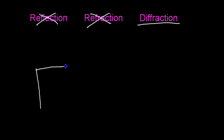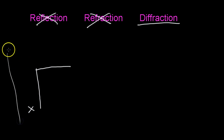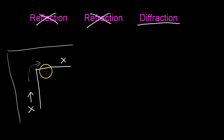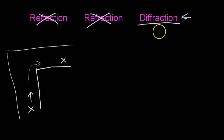A good way to explain diffraction is: let's say you're around the corner — you're here, there's a street, another street, and your friend is over there. You're looking, but you can't see your friend because you can't see around the corner. But if your friend yells at you, you can still hear him. You can't see around the corner, but you can hear around the corner. That's because sound waves will diffract better than light waves.